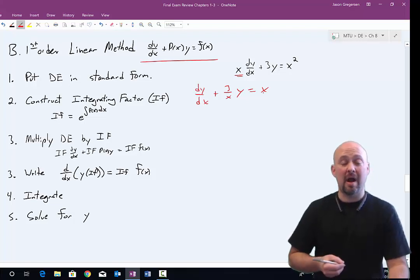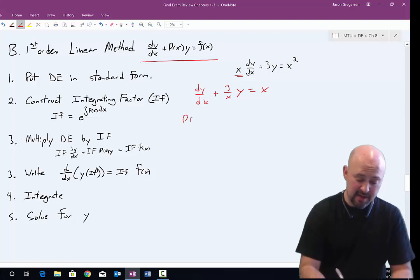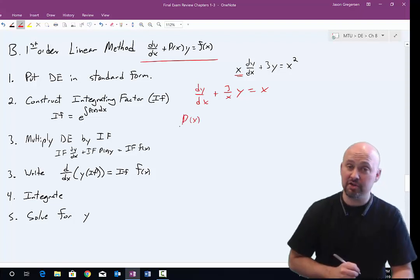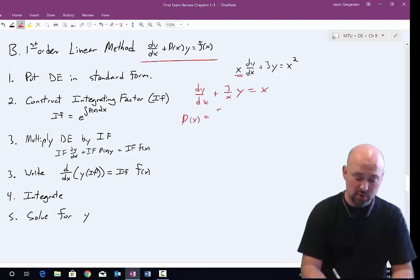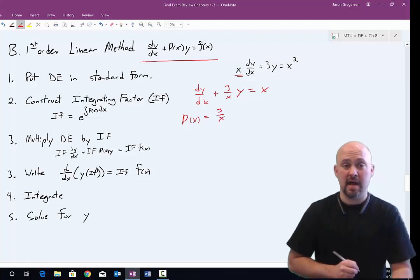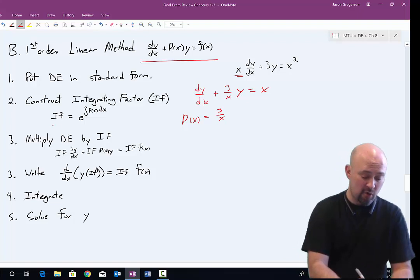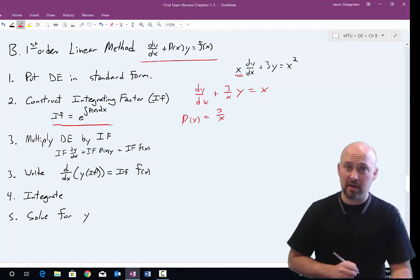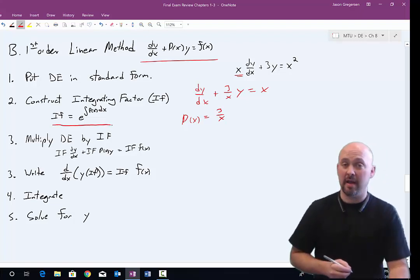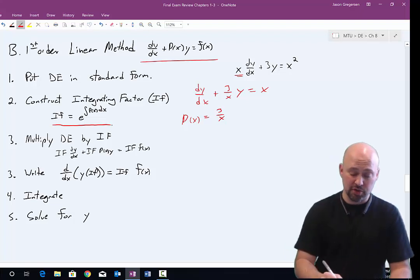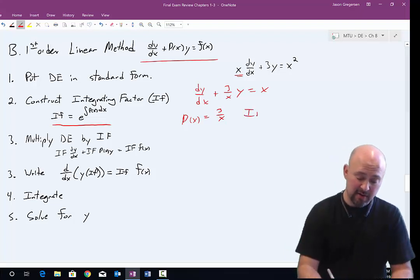Now that I'm in standard form, I can properly identify what my P(x) is. In this case, I see my P(x), which is the coefficient of the y term, is equal to 3 over x. And then I can use that P(x) value to calculate my integrating factor. My formula for my integrating factor is right there. In the class, we've talked about why it has that formula. For now, we'll just use it. That means my integrating factor is e raised to the integral of 3 over x dx.